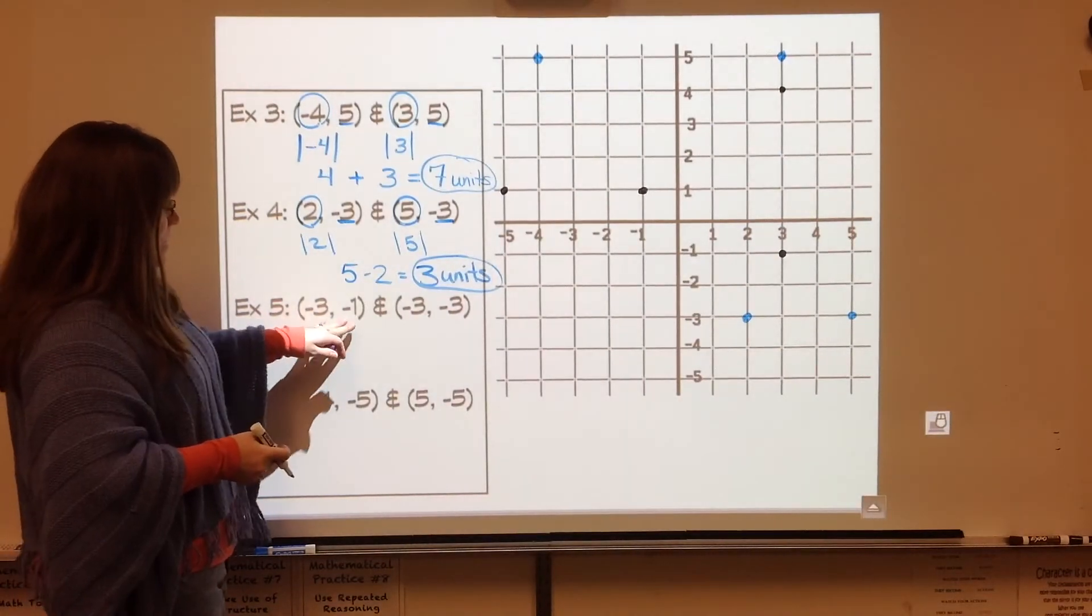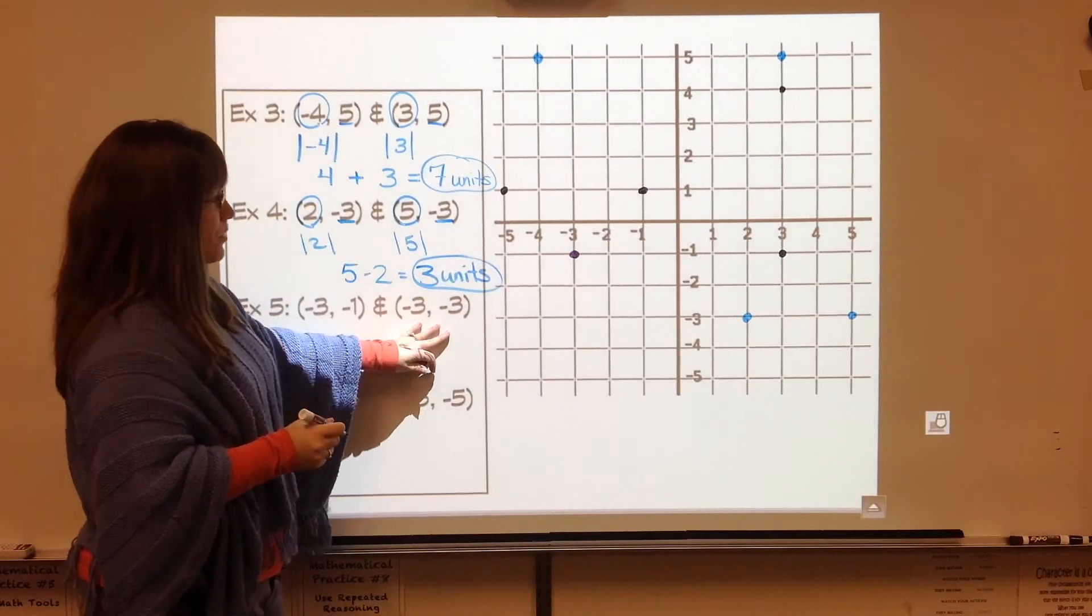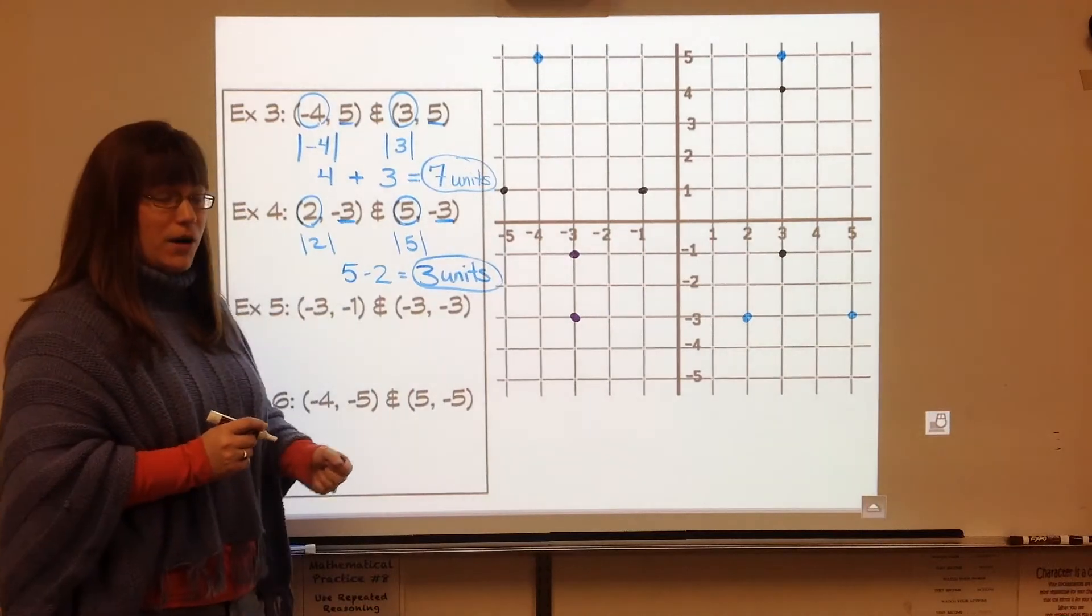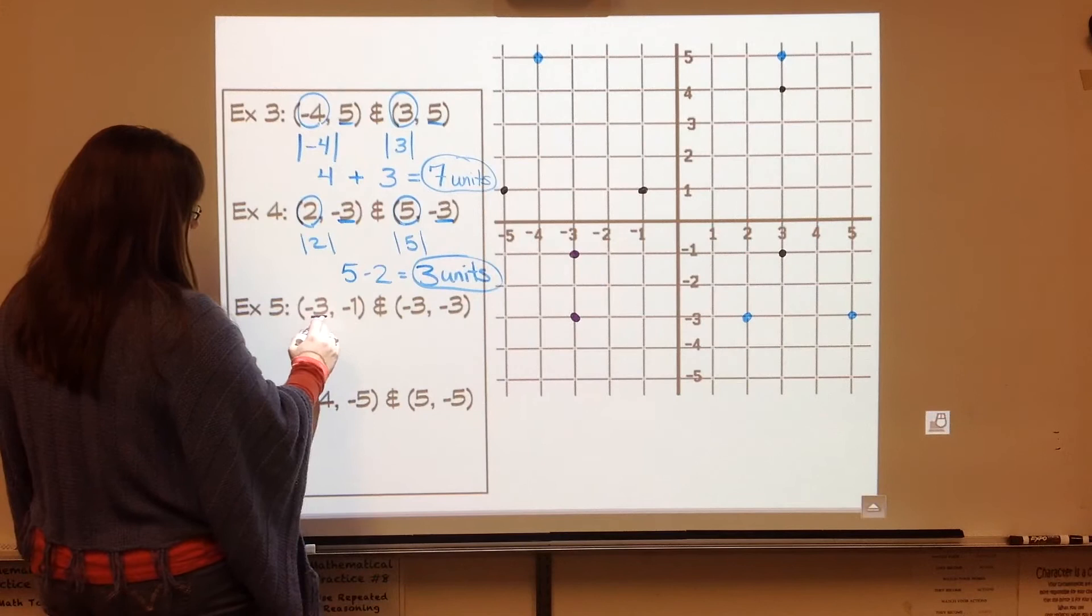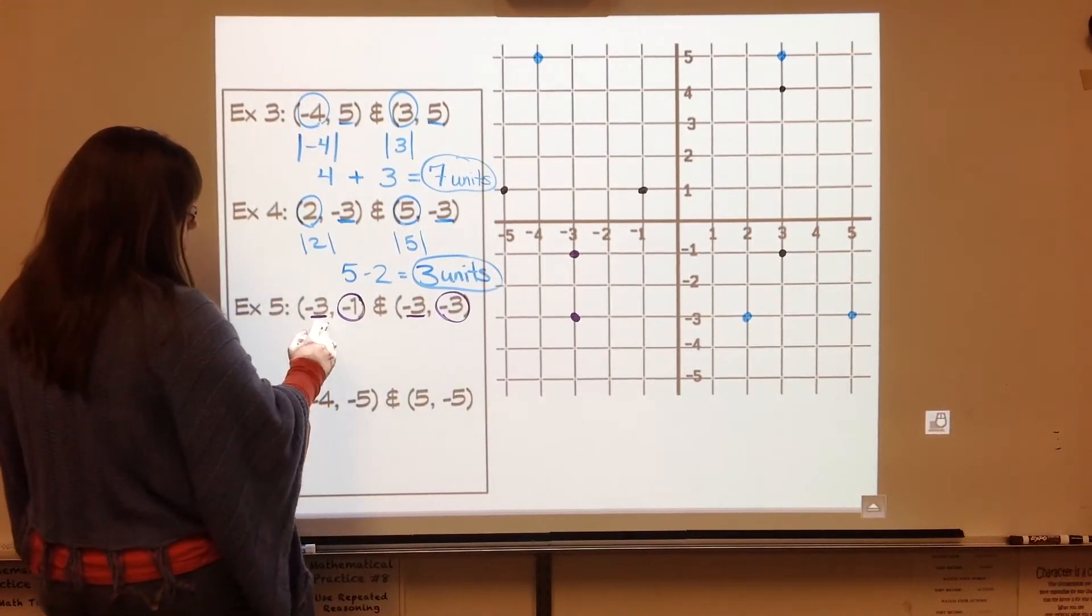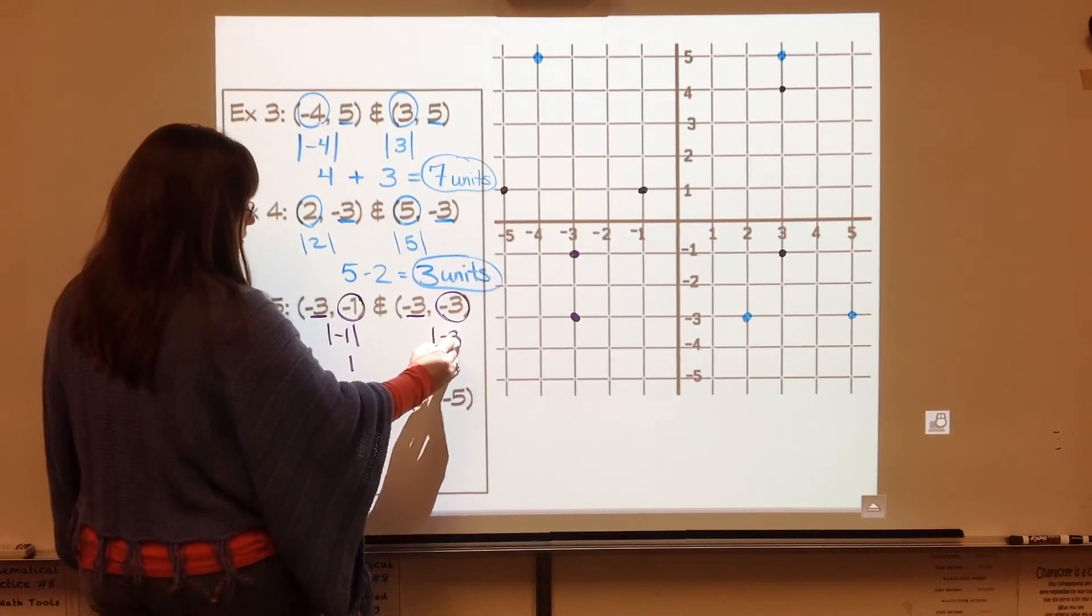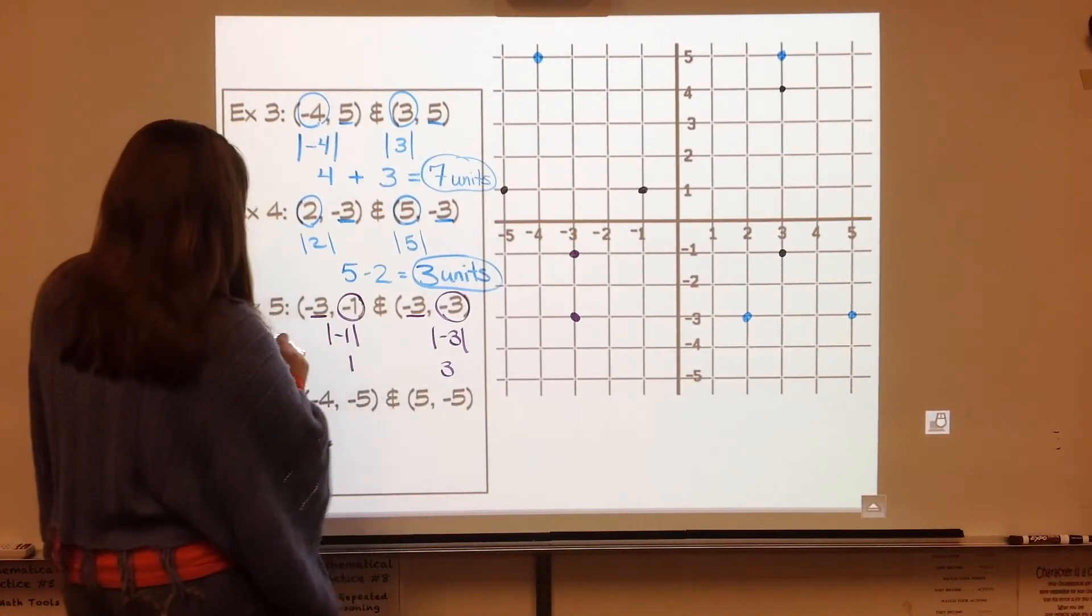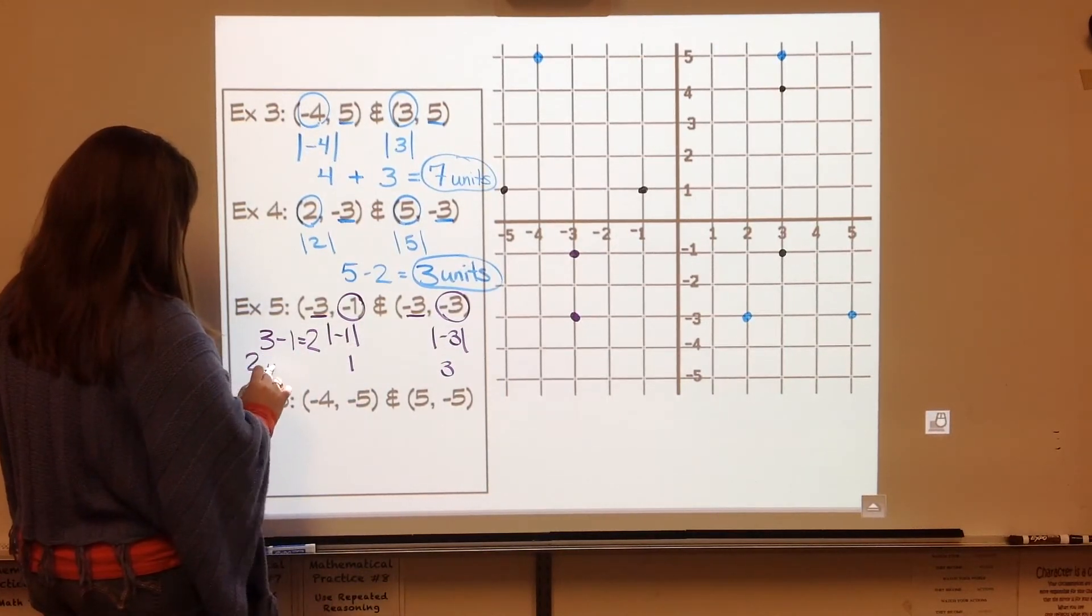So negative three comma negative one is here. Negative three comma negative three is here. This is another situation that it's in the same quadrant, quadrant three. I can see that there are two away, but I can also prove it working with negative one and negative three. So negative one's absolute value is one, negative three's absolute value is three. Because they're in the same quadrant, I need to take the two numbers and subtract them. And my answer is two units.